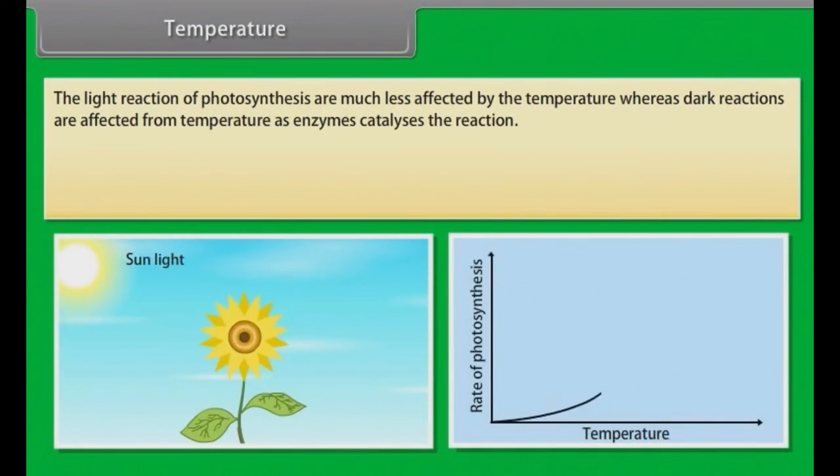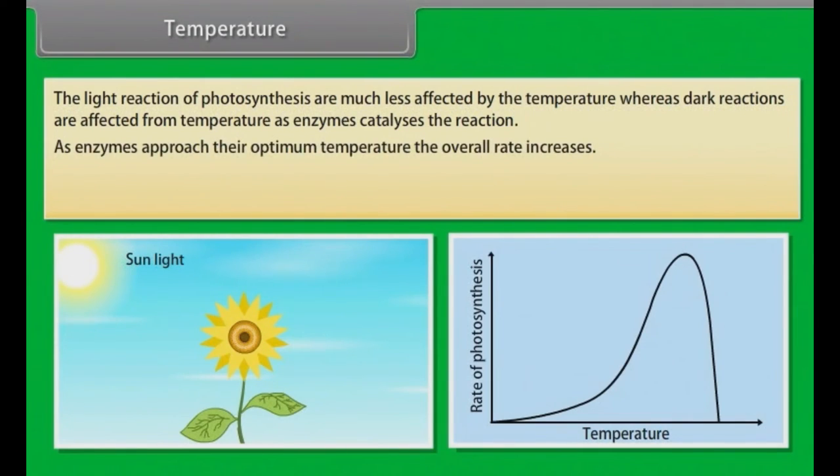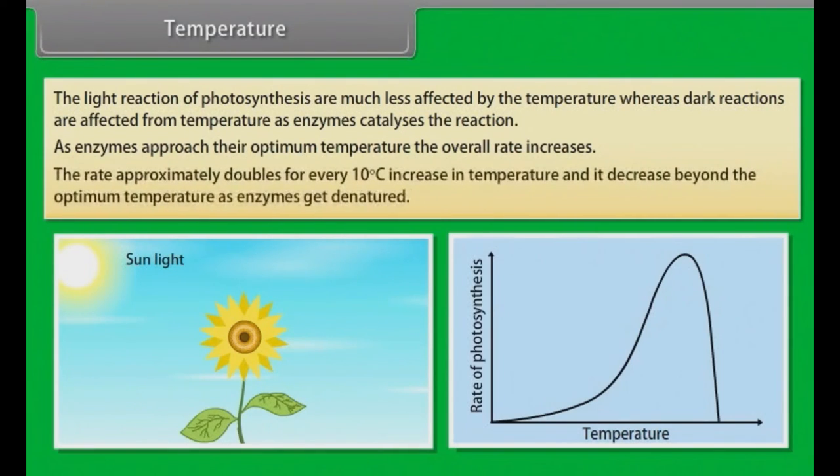Temperature: The light reaction of photosynthesis is much less affected by temperature, whereas dark reactions are affected by temperature as enzymes catalyze the reaction. As enzymes approach their optimum temperature, the overall rate increases. The rate approximately doubles for every 10 degrees Celsius increase in temperature, and it decreases beyond the optimum temperature as enzymes get denatured.